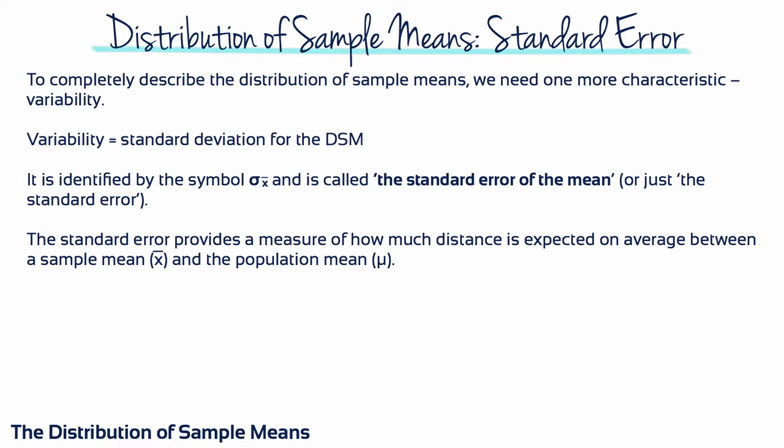To completely describe the distribution of sample means, we need one more characteristic: variability. Variability equals the standard deviation for the distribution of sample means. It's identified by the symbol sigma x-bar and it's called the standard error of the mean, or sometimes just the standard error. The standard error provides a measure of how much distance is expected on average between a sample mean and the population mean. Remember that a sample is not expected to provide a perfectly accurate reflection of its population. Although a sample mean should be representative of the population mean, there typically is some sampling error between the sample and the population.